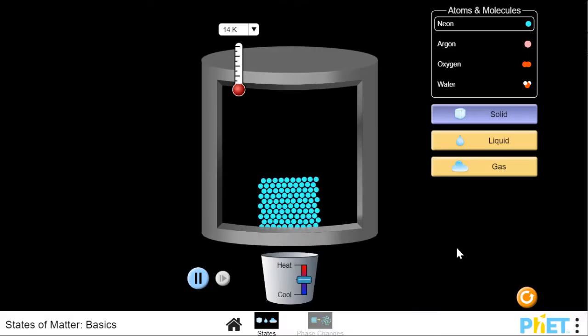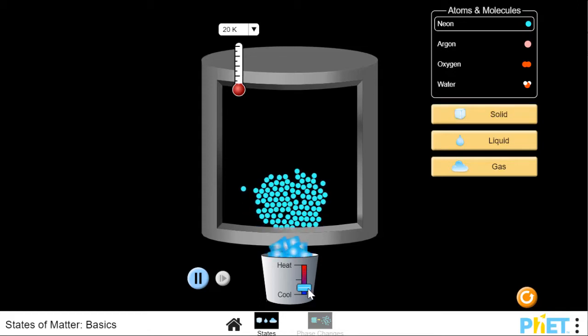Here we are in the PhET game called States of Matter Basics and we're in the first game called States. Just to show you around, here's our container. Here's our atoms or molecules. You can choose of these different atoms or molecules over here. And then we also have a heat lever here that I can drag this blue bar up to make it warmer or down to make it colder. And then I can also choose one of these here to automatically put the temperature that would make my atoms be in the state of solid, liquid, or gas.